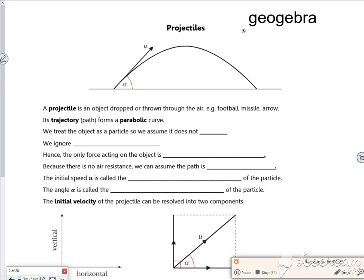So it talks about projectiles. A projectile is just an object which is dropped or thrown, like footballs, missiles, arrows or something like that. The trajectory is the path it follows and it tends to do a parabolic curve, an n-shaped curve, an upside down quadratic.